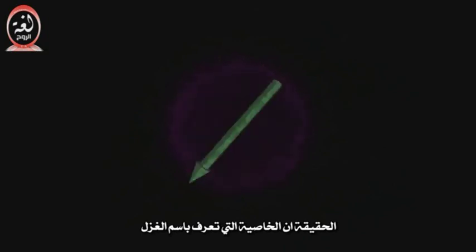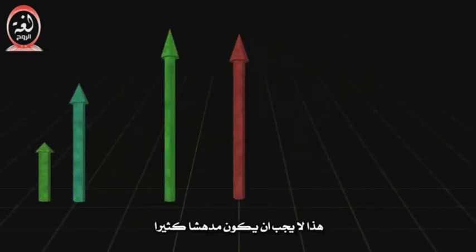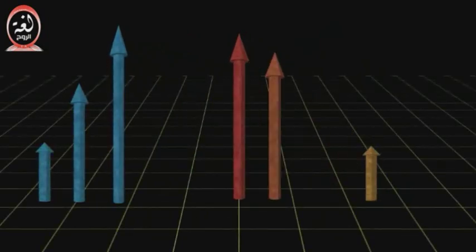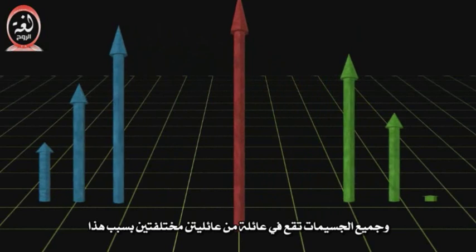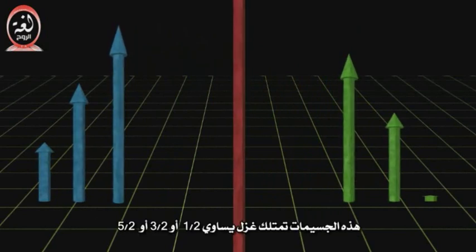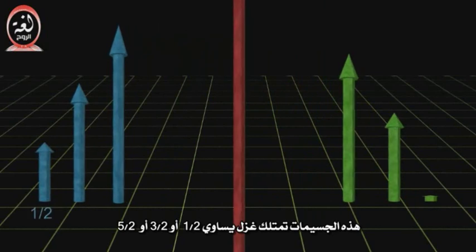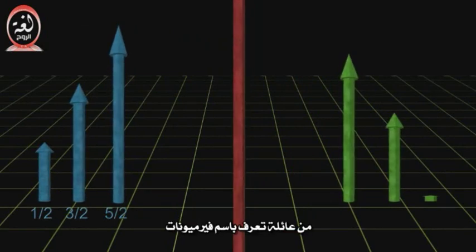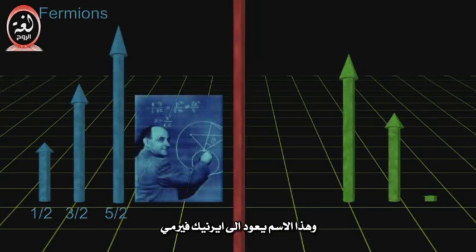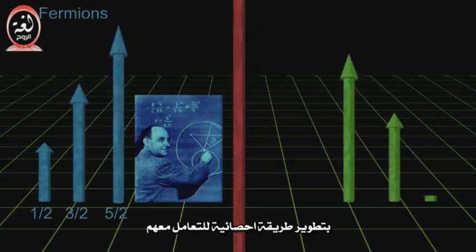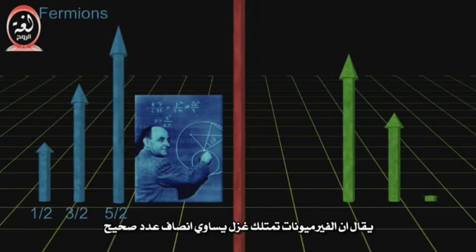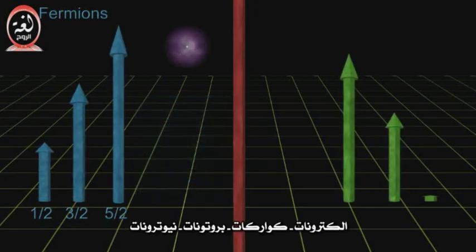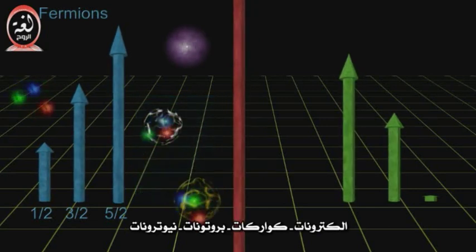The property called spin is quantized as well — no big surprise. All particles fall into one of two different families because of this. Those particles that have spin equal to one half, three halves, five halves, and so on, form the family called fermions. The name comes from Enrico Fermi, who along with Paul Dirac developed the statistical methods of dealing with them. Fermions are said to have half-integral spin, and electrons, quarks, protons, and neutrons are all in this family.